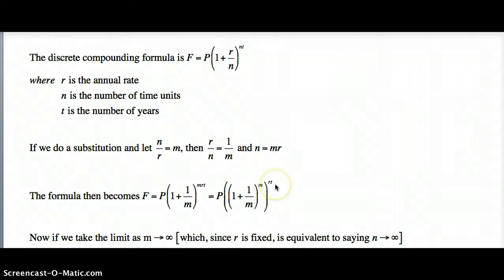Now what we've got to do for continuous compounding is that the number of time units tend to infinity, so we're letting n go to infinity. But because n is equal to mr, letting n equal to infinity is the same as m equal to infinity, because the rate is fixed—the annual rate is fixed, so r is just a constant. So m is equal to n over r, so if n goes to infinity, so does m.